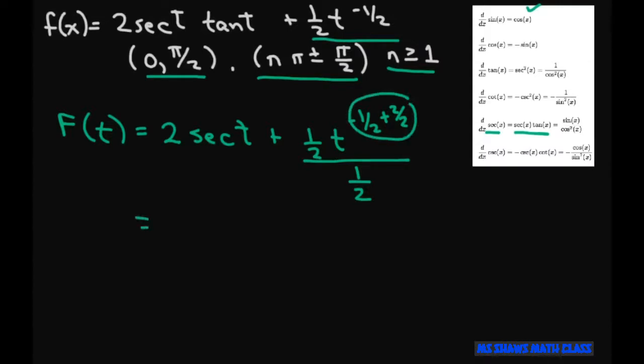So then you clean that up, you get 2 secant T plus these two cancel. So you just get T to the 1 half and then plus C. And that's going to be the same for both of these domains here.